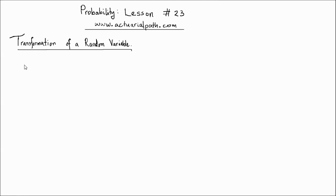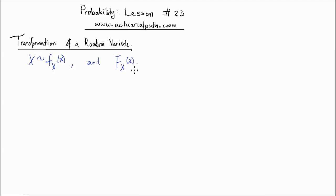Welcome to lesson number 23 on probability. In this lesson we study the transformation of a random variable. Suppose we have a random variable x with a probability density function f of x and CDF capital F_x of little x. The question here is: if you have a transformation of the random variable x, let's say x squared, and you call that transformed random variable y, then what's the PDF of the random variable y?